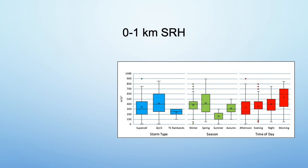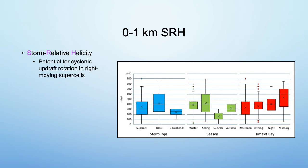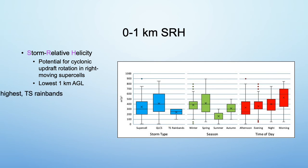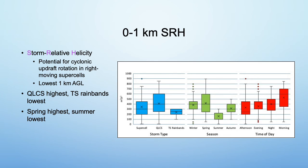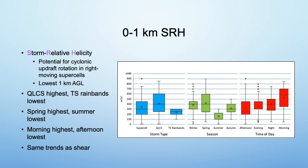The last parameter is 0 to 1 km SRH, which stands for Storm Relative Helicity. SRH is the potential for cyclonic updraft rotation in right-moving supercells; for this project it is in the lowest 1 km above ground level. QLCSs had the highest average SRH and TS rain bands had the lowest. Spring was the season with the highest average, whereas summer was the lowest. Morning was the time of day with the highest average and afternoon was the lowest. These matched the trends for shear.